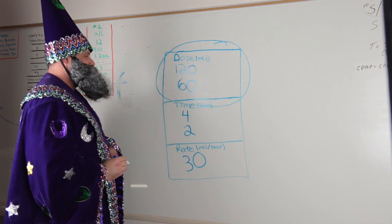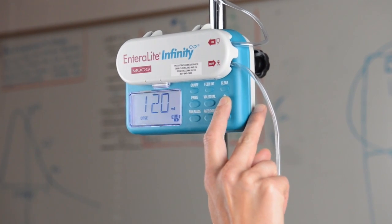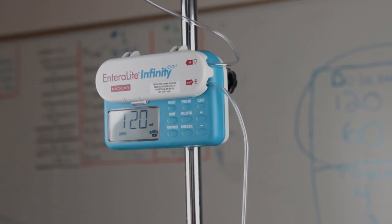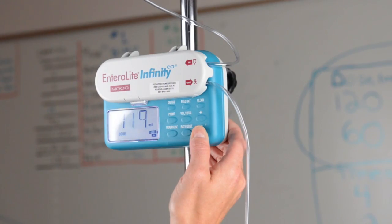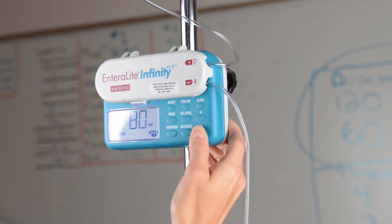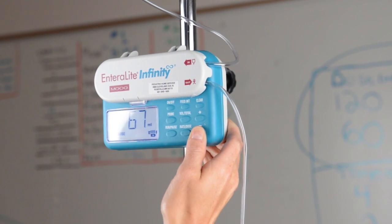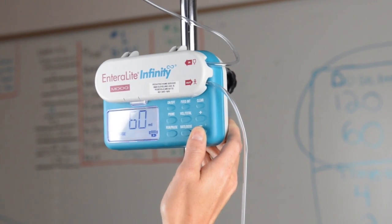You now have the numbers for rate and dose to enter into the pump. When you move from the four-hour feeding to the two-hour feeding, you must change the number in the pump for dose. On some pumps, you change the number for volume to be delivered. For this example, keep the number the same for the rate.